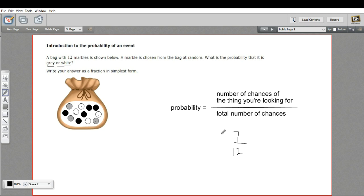And our probability is seven out of 12, or seven twelfths. So that is how to figure out the probability of an event.